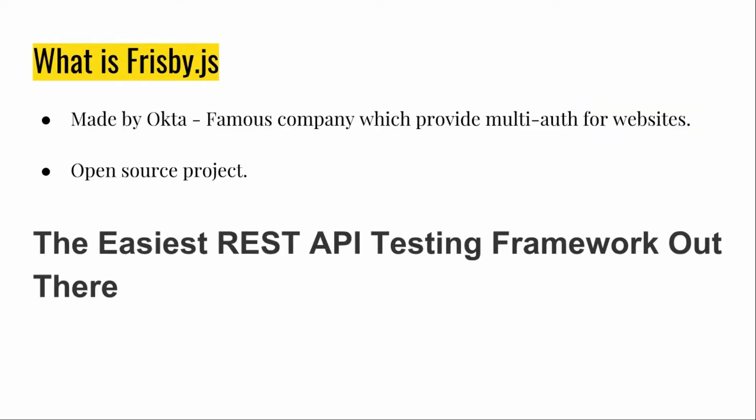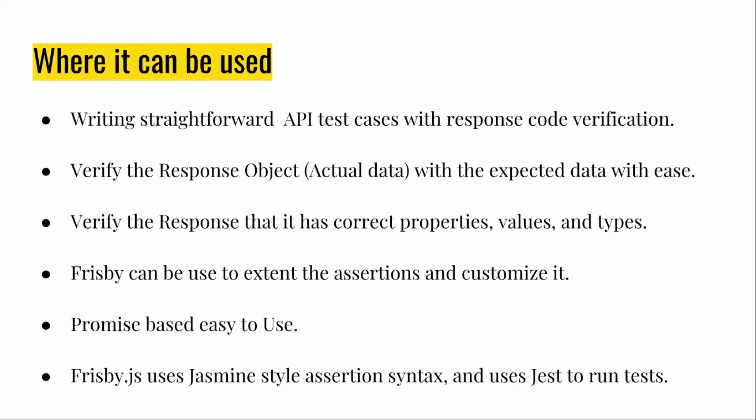So what is Frisbee.js? Frisbee.js is basically a REST API testing framework created by Okta — a famous company that provides one-click multi-auth for websites. Frisbee.js is an open source project from them. It's basically the easiest API testing framework I've used, and the very simplest one. If you have a small API testing requirement, Frisbee.js is probably your best bet.